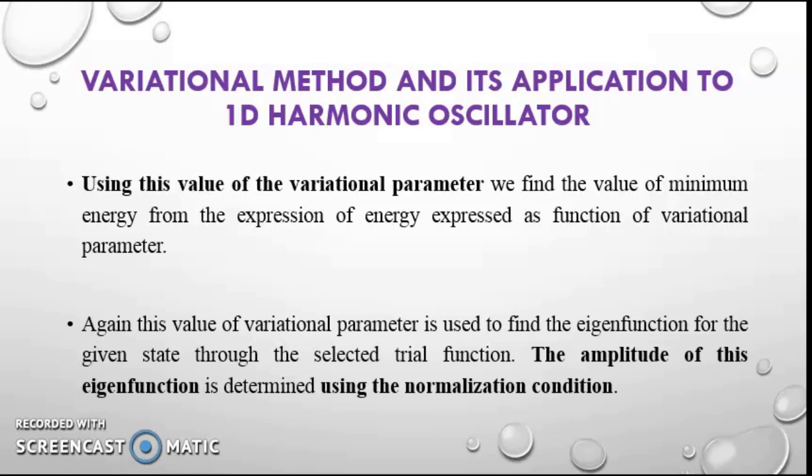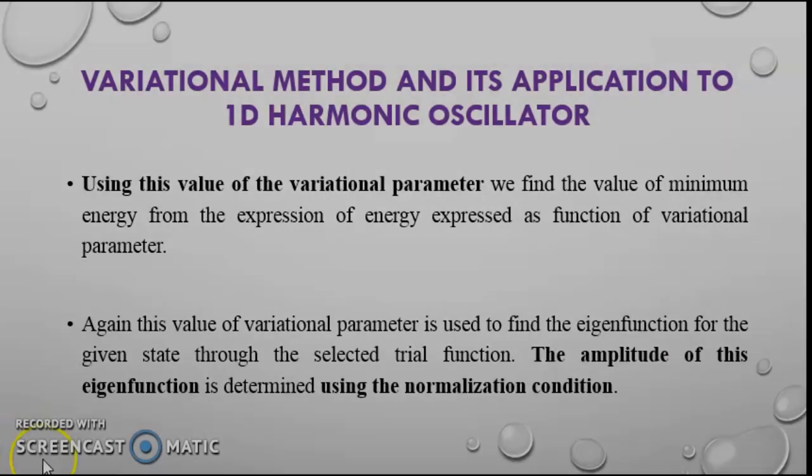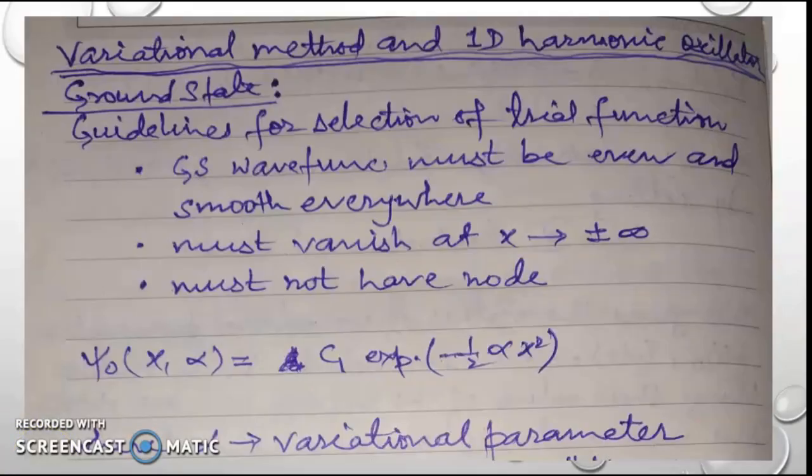This value of the variational parameter is also used to find the eigenfunction for the given state through the selected trial function. Now, let us apply this variational method to determine the ground state as well as the first excited state energy and wave function for the one-dimensional harmonic oscillator.